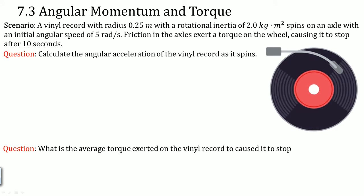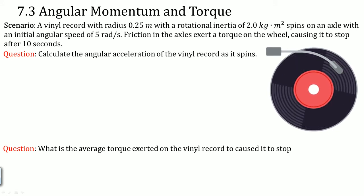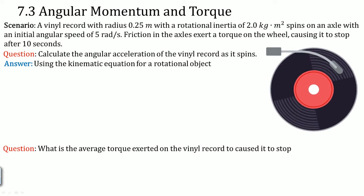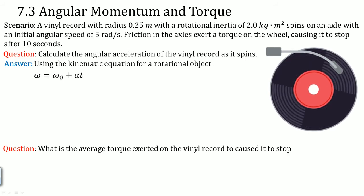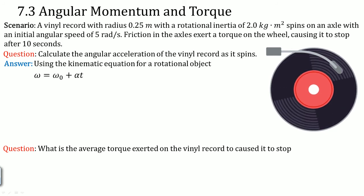Calculate the angular acceleration on the vinyl record as it spins. The approach is to use the kinematics equation for a rotating object. The equation we're using is the angular equivalent of the linear form: angular velocity equals initial angular velocity plus angular acceleration times time.